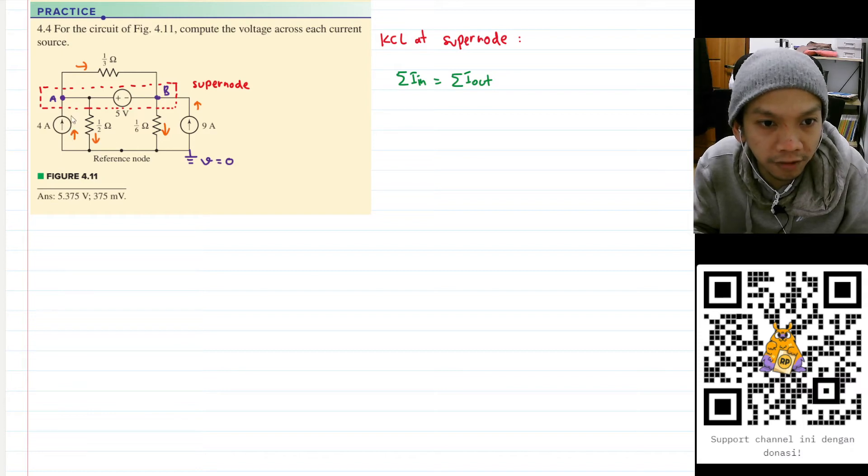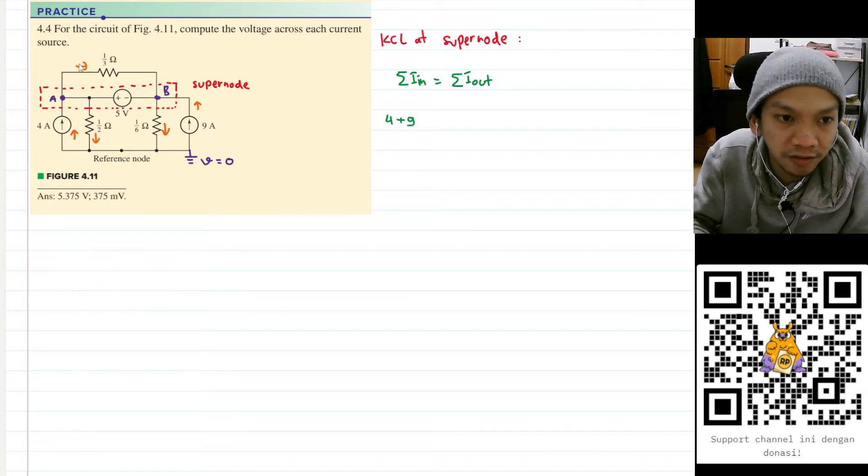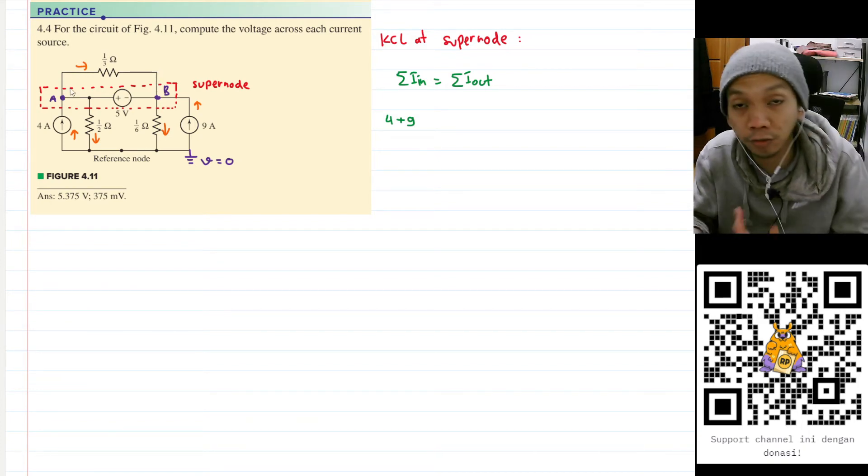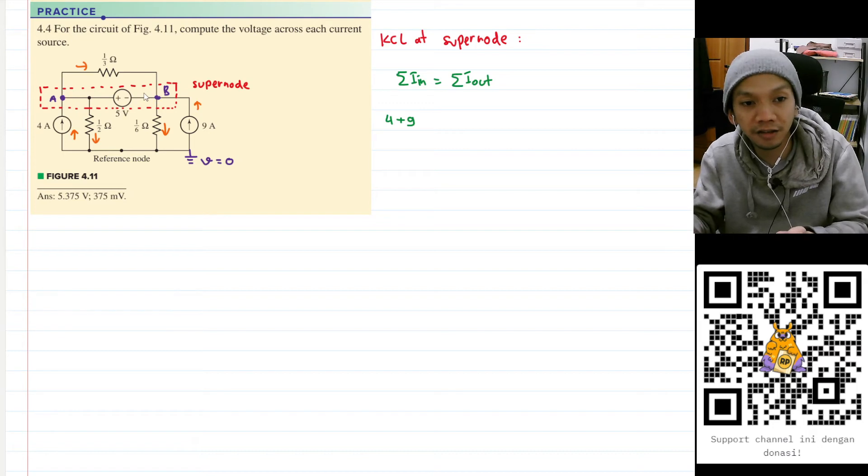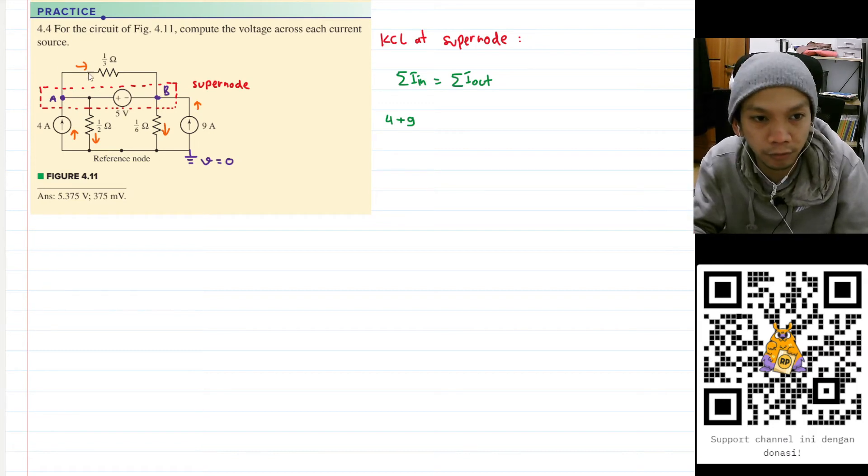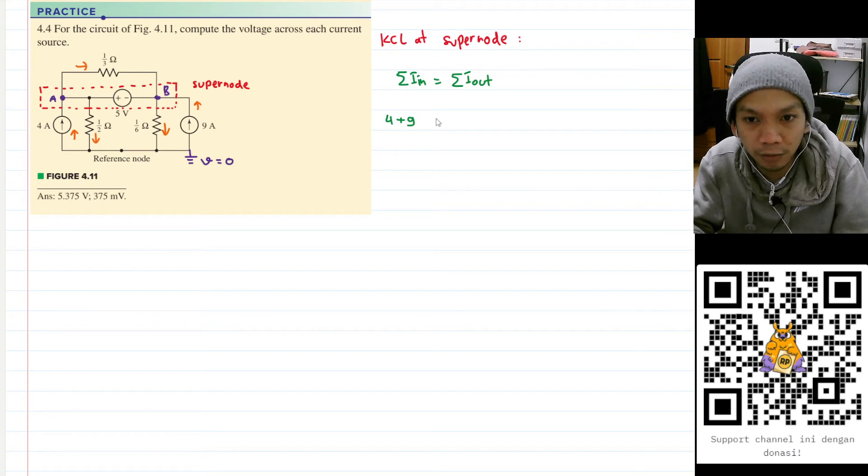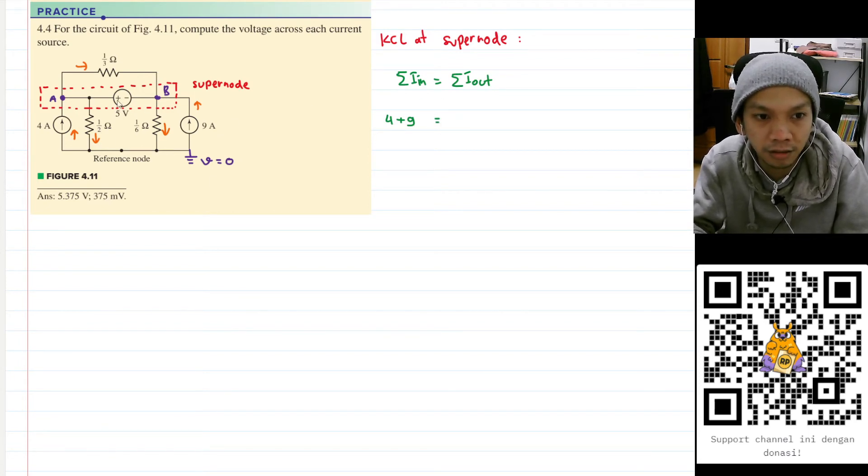Okay, let's find out the current that goes in. This four is going in, this nine is going in, so four plus nine. And then this current here also going in, but remember that this current is also going out. So it's going out from this current and going in at this current, so they will cancel each other. So we don't need to take account of this current.